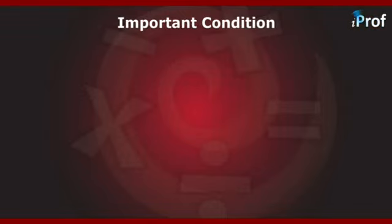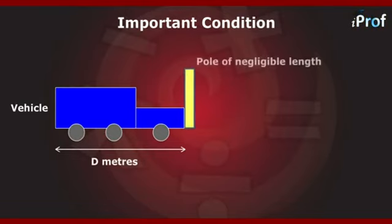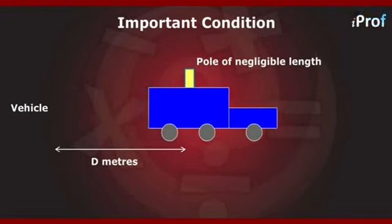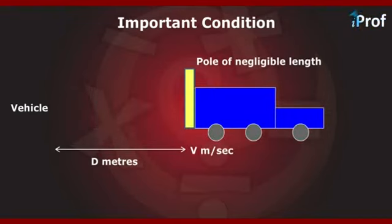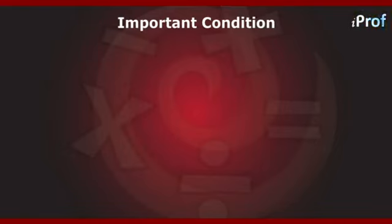Suppose we have a vehicle of length d meters and a pole of negligible length, and the vehicle is moving with a speed of v meters per second. The time taken to completely cross the pole is equal to d/v seconds.